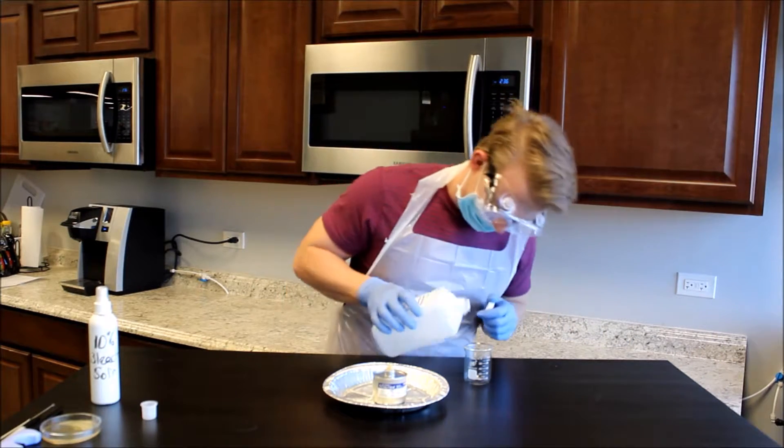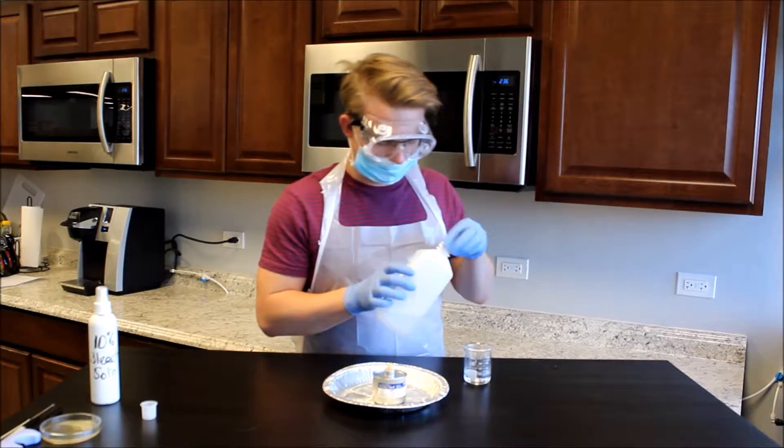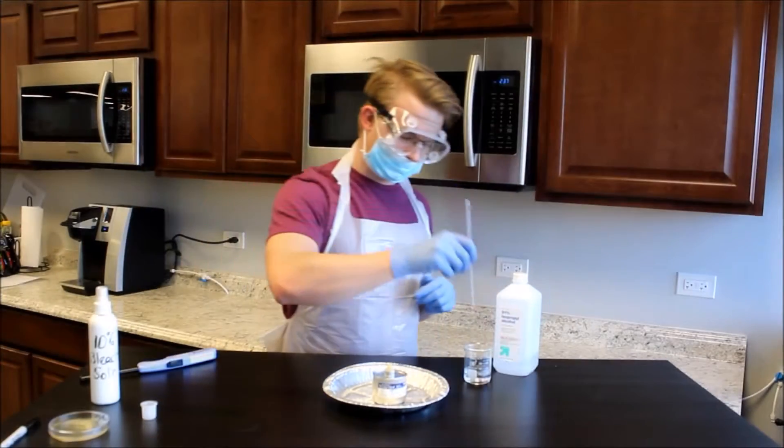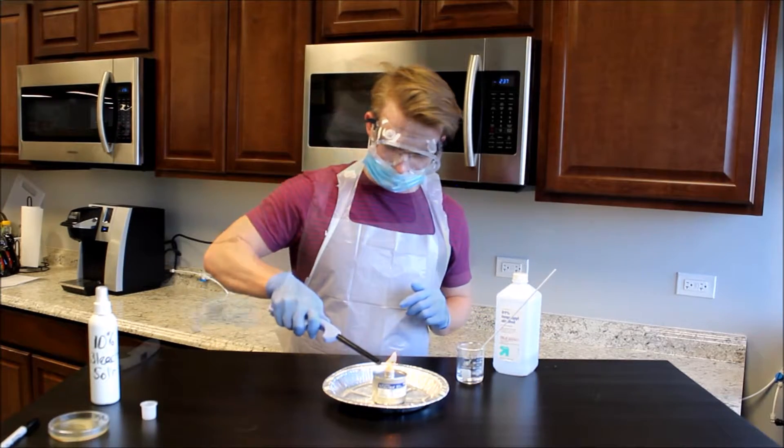Pour 25 ml isopropyl alcohol into the 100 ml glass beaker. Place the metal inoculation loop into the beaker of alcohol. Light the burner canister.